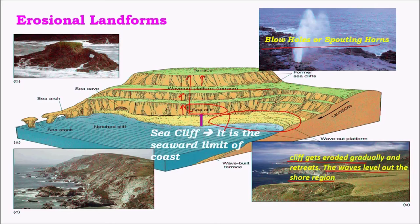Sea caves, sea arches, and sea stacks are formed by differential erosion. Where the strata of a sea cliff is weak, it is eroded to give a cave-like structure called a sea cave. If this cave-like structure forms between ocean masses, it gives rise to an arch structure called a sea arch. When one side of the arch breaks and falls into the sea, the remaining section is seen as a sea stack.